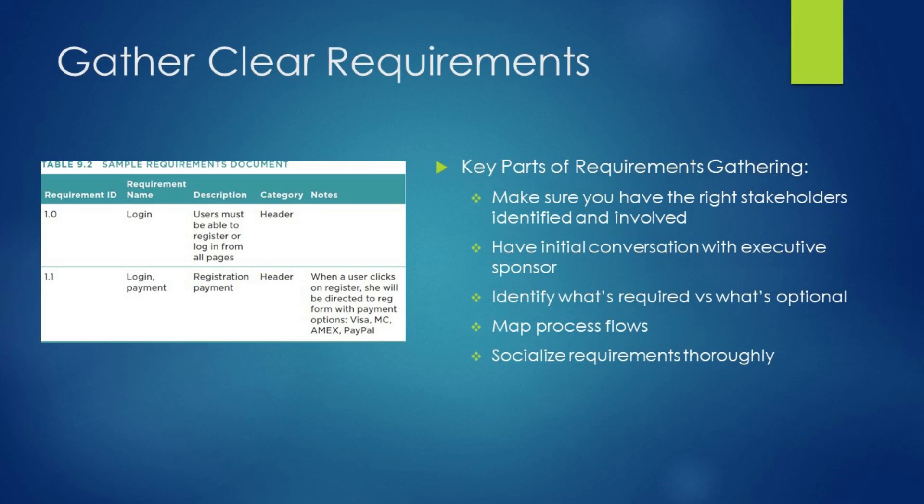Number 1: Gather clear requirements. The first part of good requirements gathering is making sure you have all of the right stakeholders identified and plugged into the project from the beginning. After you're confident you have the right stakeholders involved, a good way to start gathering requirements is to have an initial conversation with the project's executive sponsor to get her thoughts around what the requirements are and let her guide you around who to talk with next.